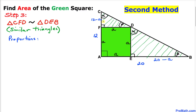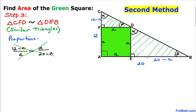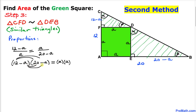Since these two triangles are similar, we can set up a proportion by equating their ratios: (12 minus a) divided by a equals a divided by (20 minus a). Cross-multiplying gives us (12 minus a) times (20 minus a) equals a times a. Expanding using distribution, we get 240 minus 12a minus 20a plus a squared equals a squared.